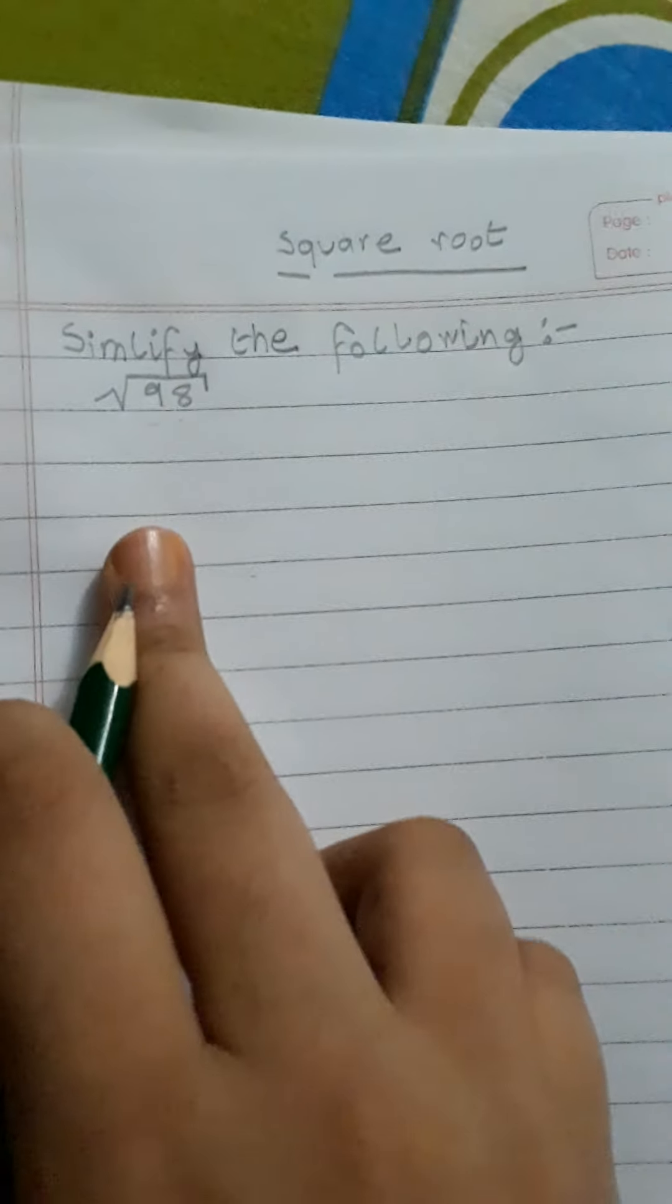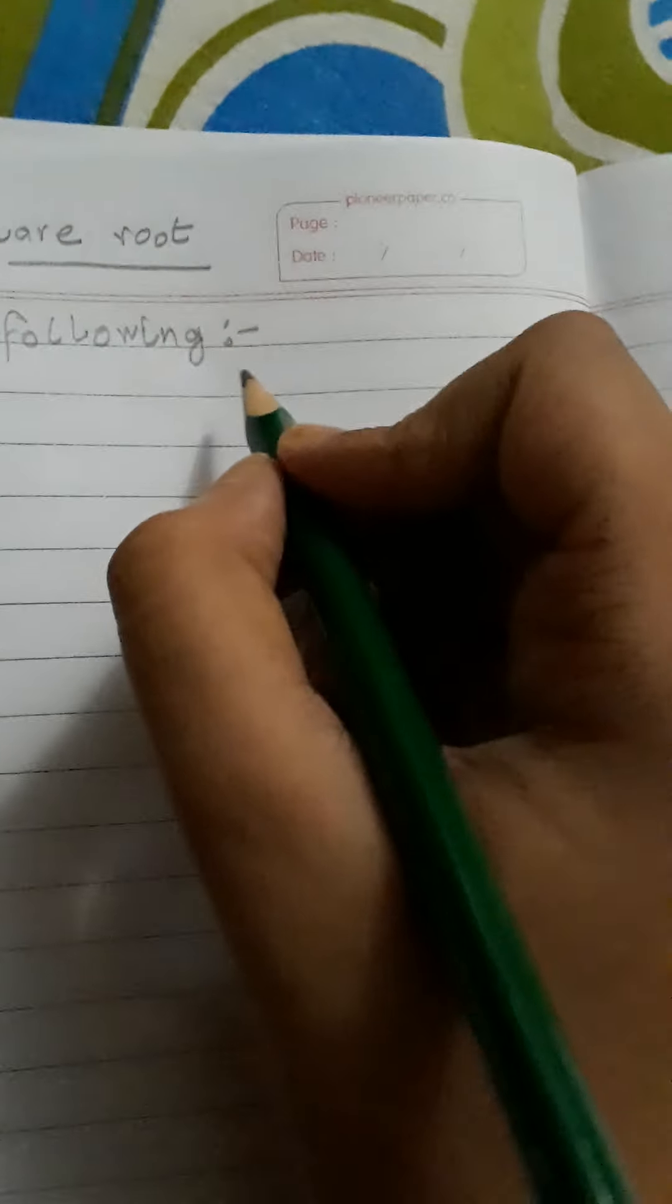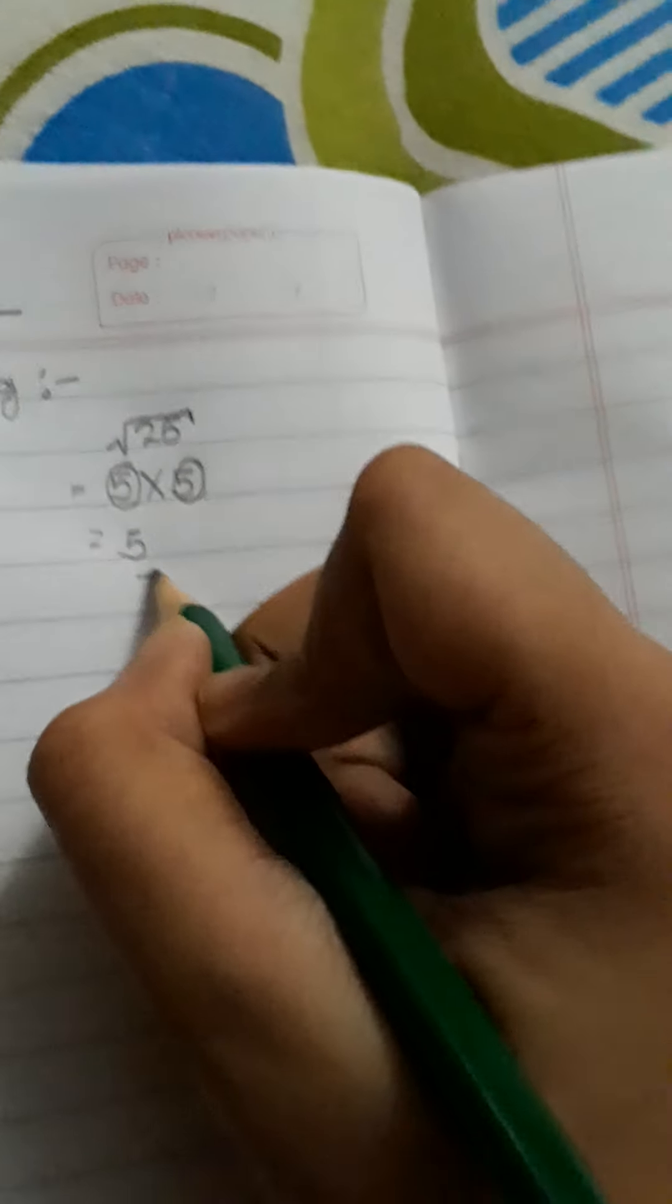A square number is a number which has the same factors used twice. So for example, let me solve 25. It factorizes to 5 into 5, and so here we have to choose one which is 5.